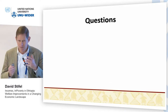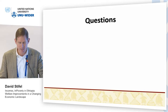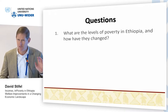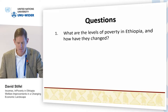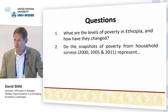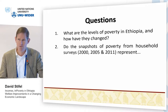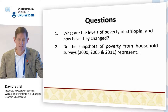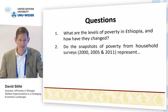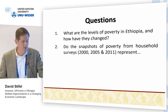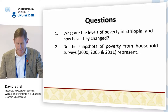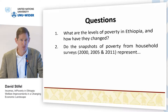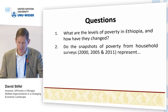This is one of the chapters in which we use the utility-consistent measures for the poverty line and the standard software package that I'll talk about as we go along. The basic question is: what are the levels of poverty in Ethiopia and how have they changed? We typically measure these with household surveys. We have three household surveys available for this analysis: 2000, 2005, and 2011. There is a 2016 survey that was conducted and the central statistical agency has analyzed it, but the analytical report has not been made public yet. The question is: do snapshots of poverty from household surveys taken in these three years represent long-term trends, or are they due to short-term shocks, or some combination of the two?